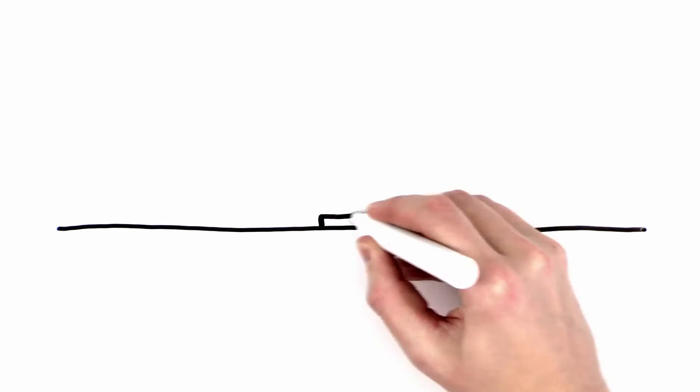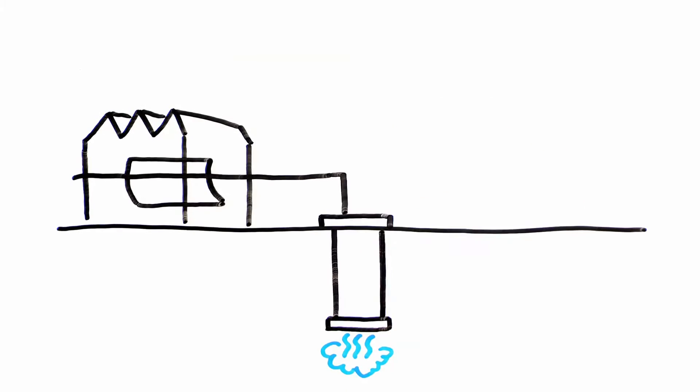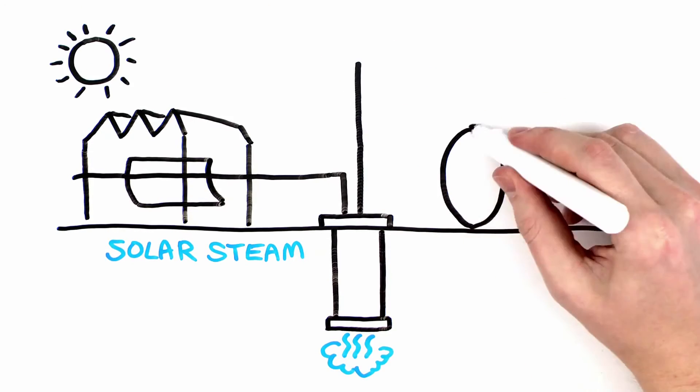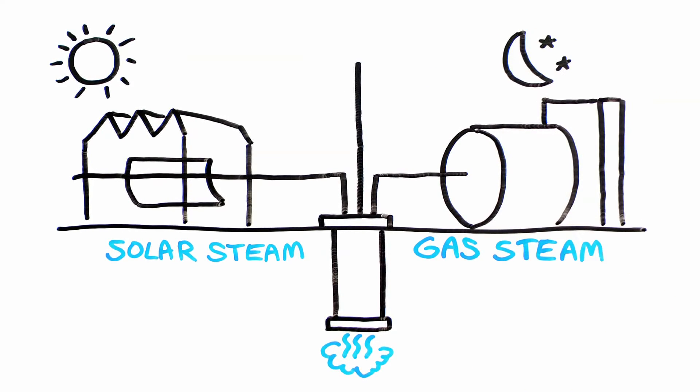To maintain steam injection around the clock, solar steam is injected during the day, and steam produced by burning natural gas is injected at night.